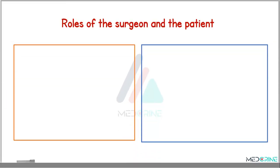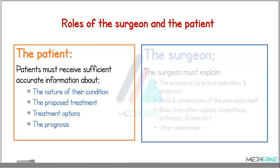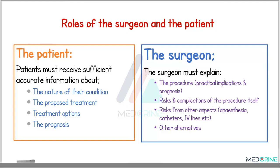As a patient, you must receive sufficient and accurate information about the nature of the condition, the proposed treatment plan, the treatment options, and the prognosis of the outcome. On the other hand, as a surgeon, the surgeon must explain the procedure, the practical implications, and the prognosis or outcomes of the surgery, the risks and complications of the procedure itself, and some of the risks from other aspects such as anesthesia administration, intravenous lines, and other alternatives.